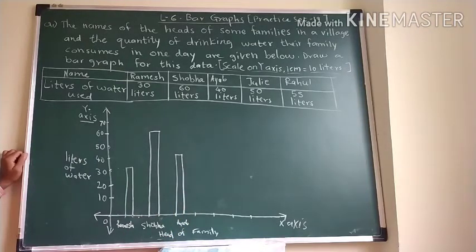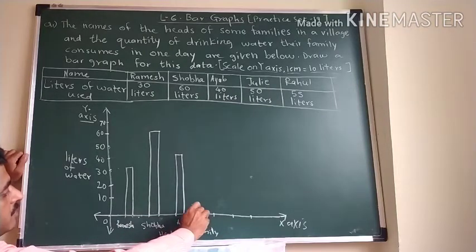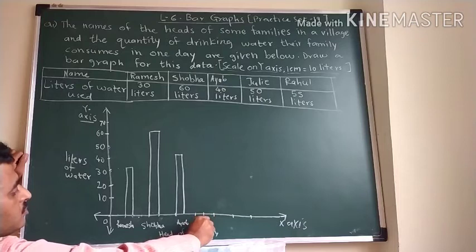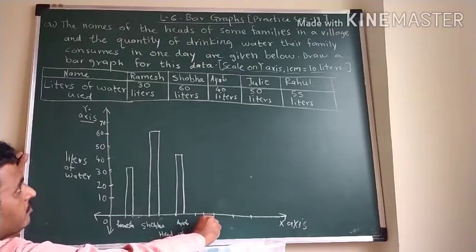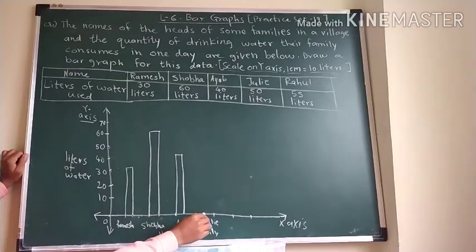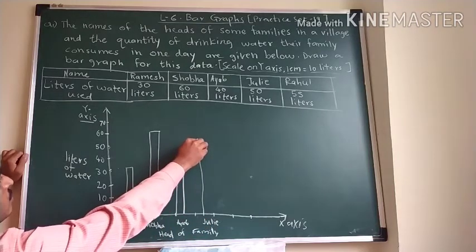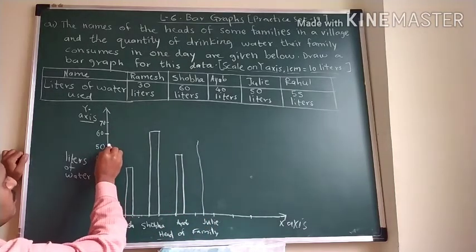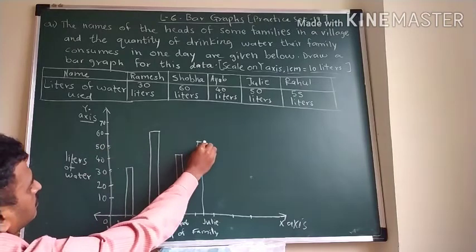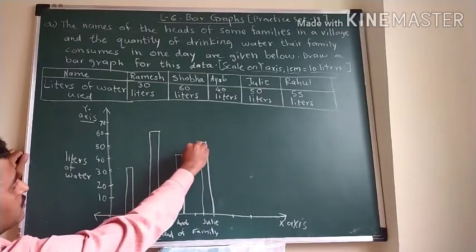Now Julie's family. Now this is half centimeter, then half centimeter we have to give. Then we have to write Julie's family. Then for Julie, 50 is there. Up to 50 we have to go. So this is the 50. This will come straight.